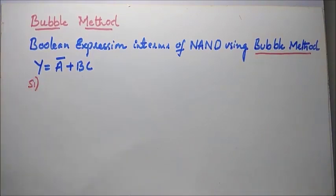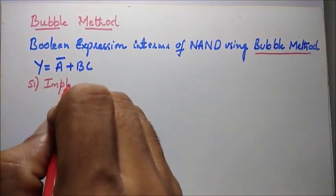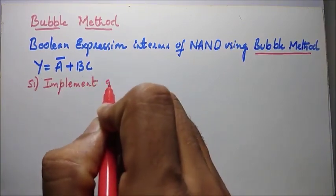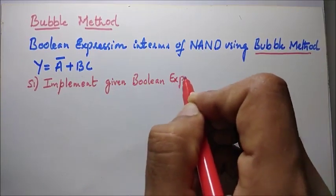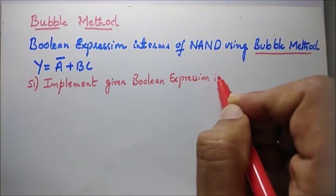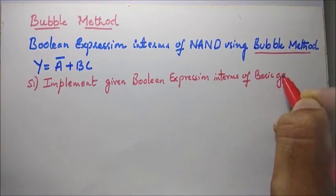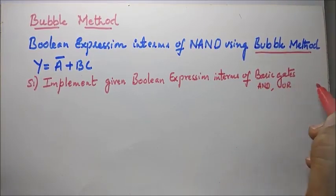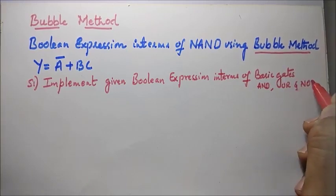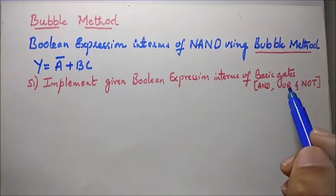Step one says: implement the given boolean expression in terms of basic gates. So the very first step is to implement the given boolean expression using basic gates — NOT, AND, and OR gates.